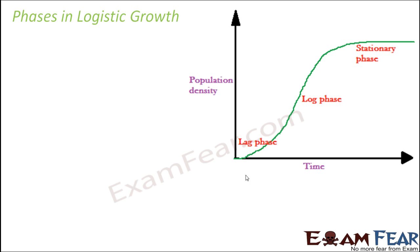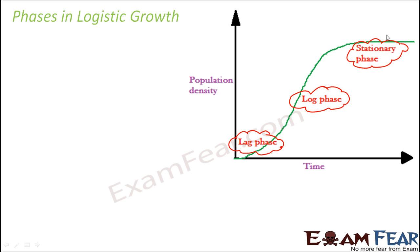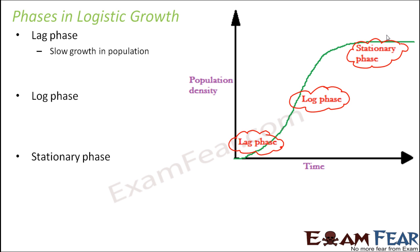Looking at the logistic growth plot, there are three important phases: lag phase, log phase, and stationary phase. The lag phase is the phase of slow growth — as time increases, the population increases slowly.